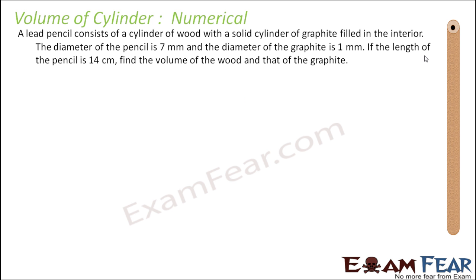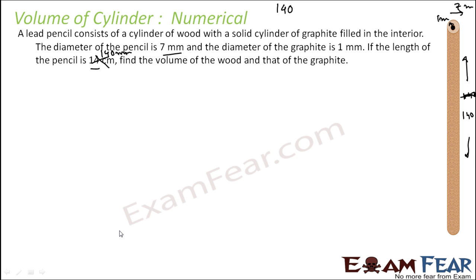A lead pencil consists of a cylinder of wood with a solid cylinder of graphite inside. The diameter of the pencil is 7 millimeter and the diameter of the graphite is 1 millimeter. The length of the pencil is 14 centimeter, which we convert to 140 millimeter. Find the volume of wood and of graphite.